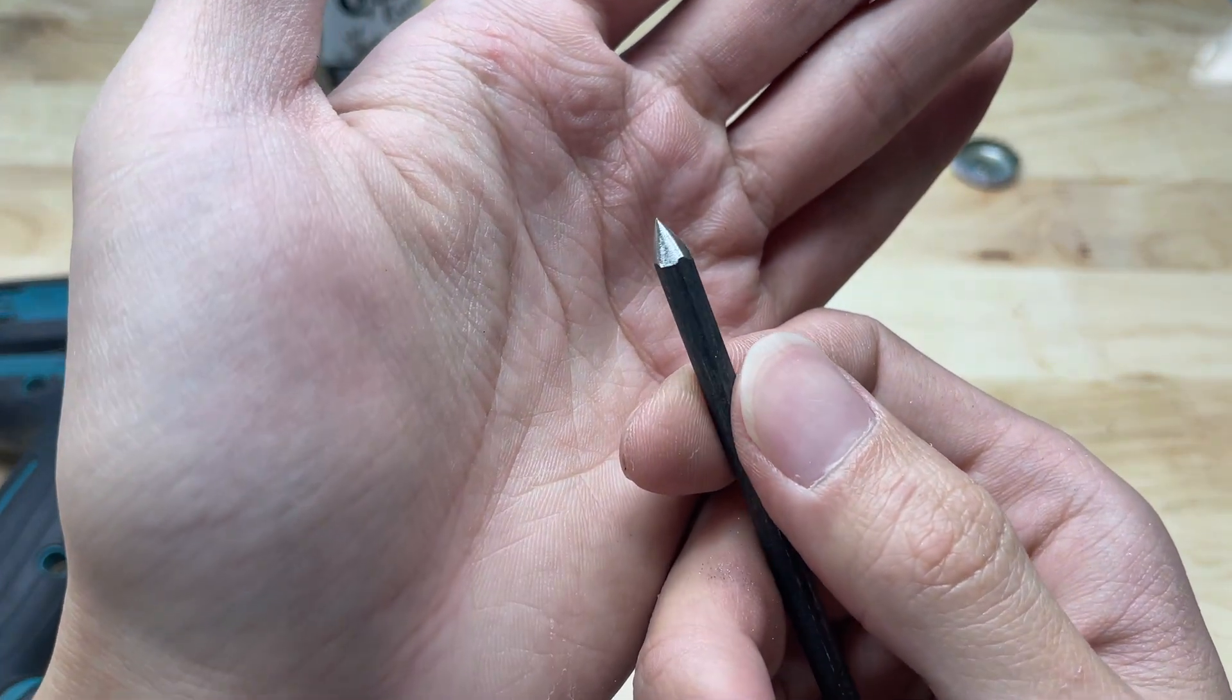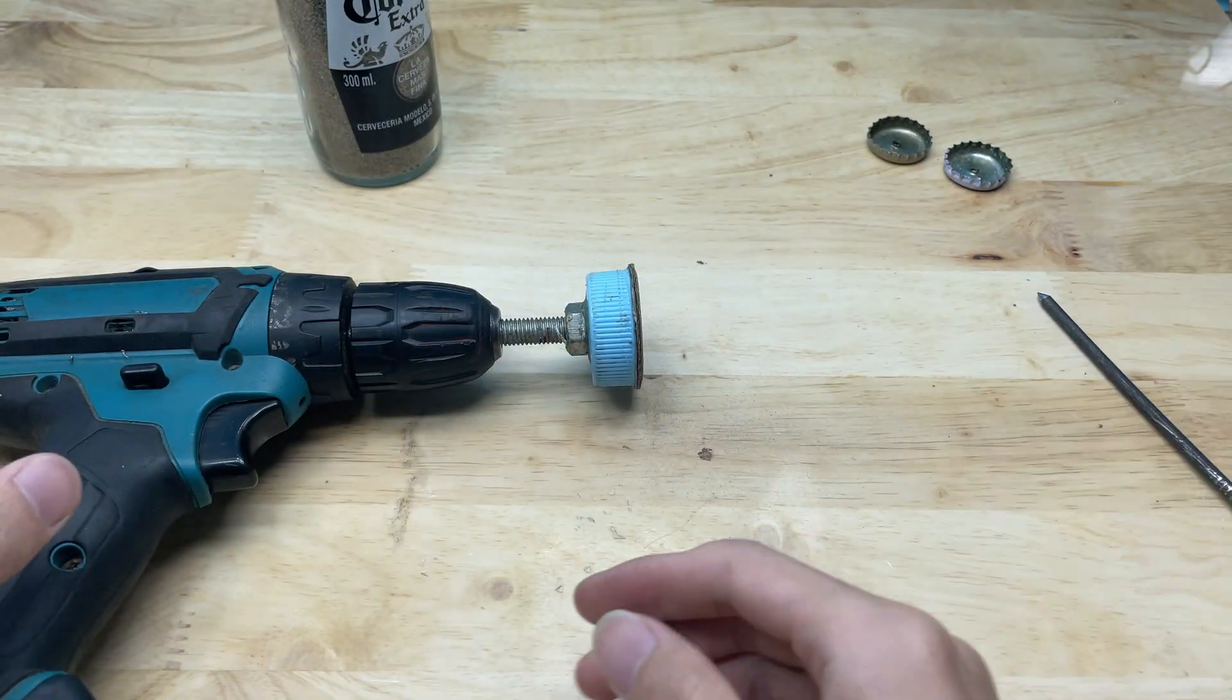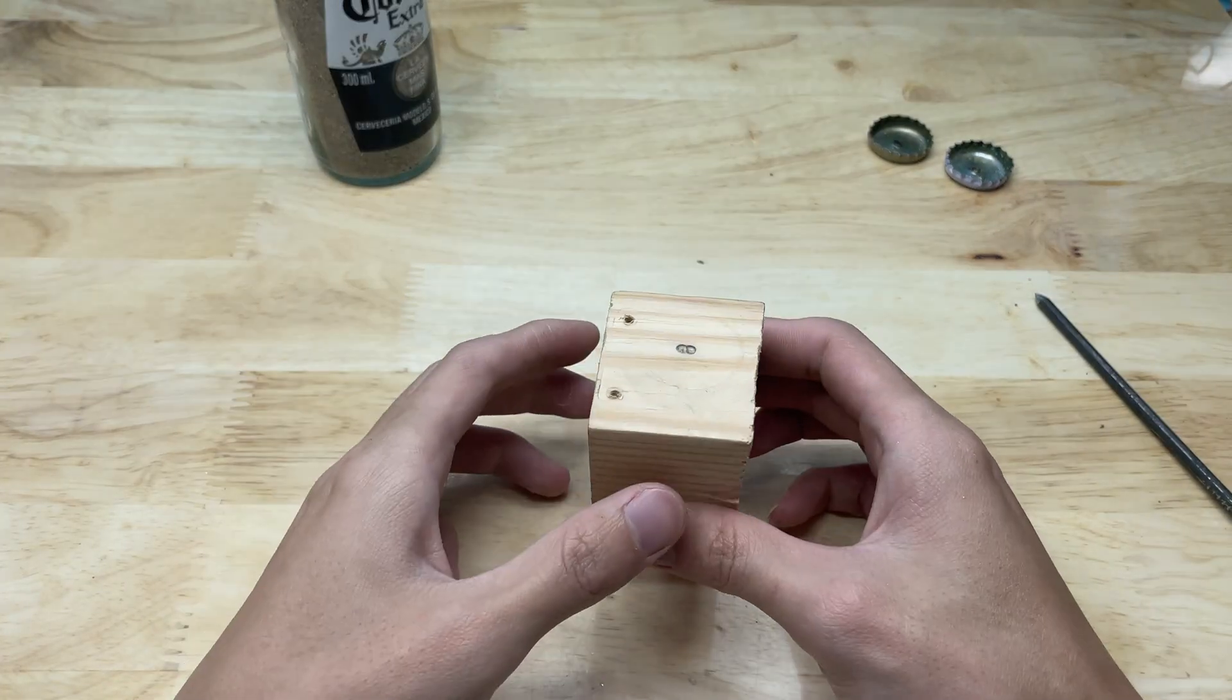After this modification, the nail tip looks cleaner and sharper, ready to serve as the welding tip in this improvised setup.